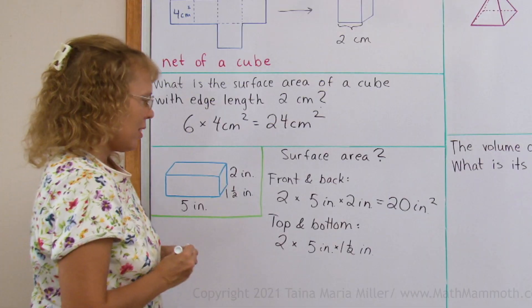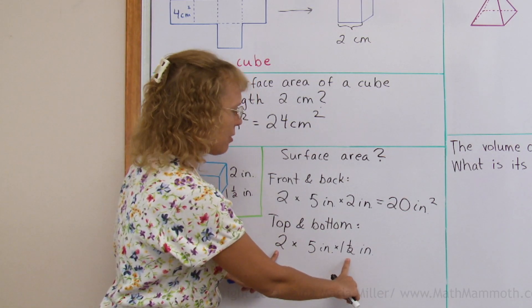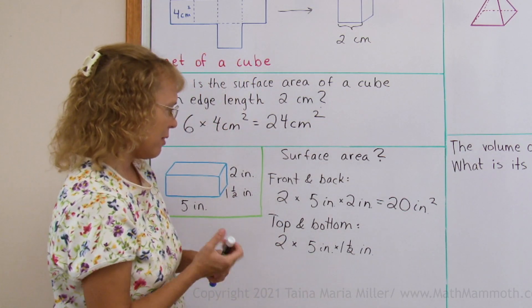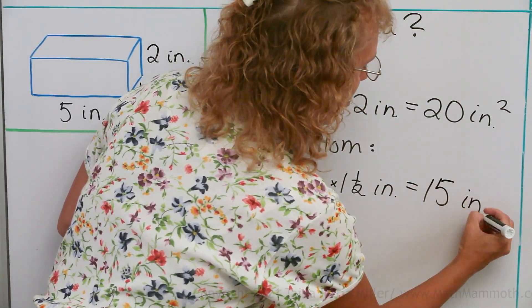Now in this multiplication, maybe I multiply 2 and 1.5, which is 3, times 5, gives me 15. And these are again square inches.